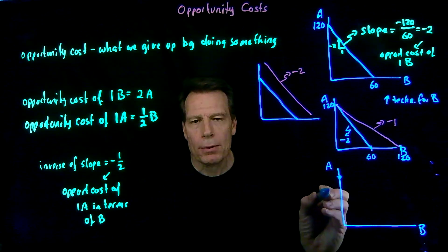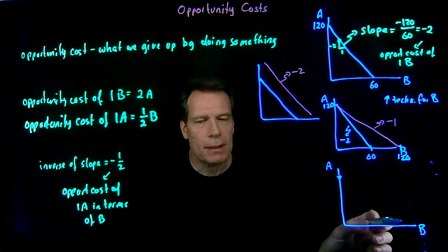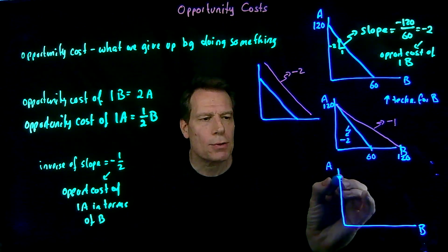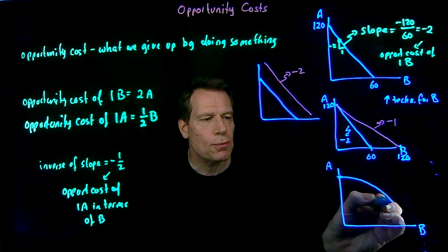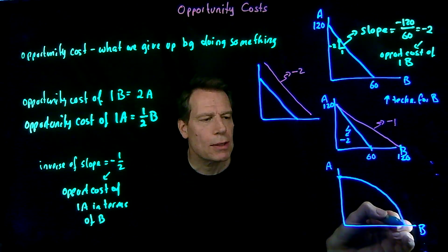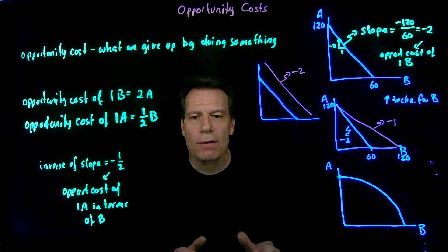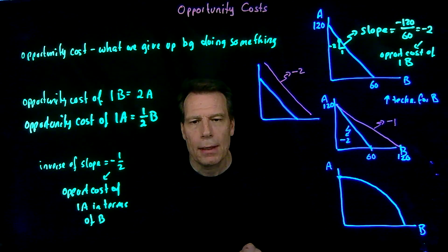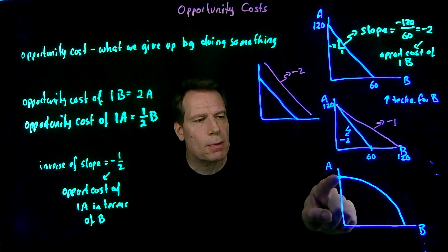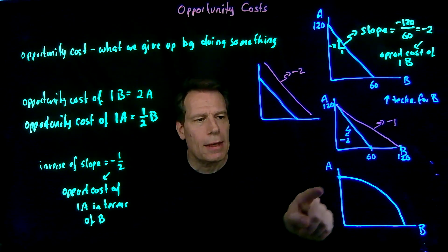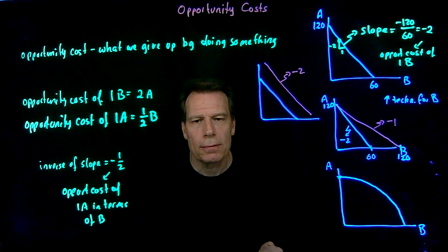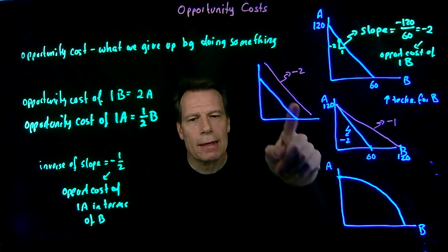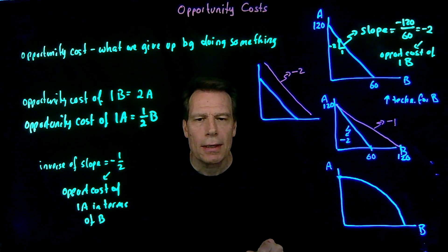So if we start with a low opportunity cost for producing additional bananas, we start with a shallow slope — but that slope gets steeper and steeper as we shift workers who are not as good at producing bananas away from the apple industry. Sometimes we'll see production possibility curves with this bowed-out shape, reflecting changing opportunity costs along the curve. But for most of our purposes, we can simply stick with the straight line production possibility curves.